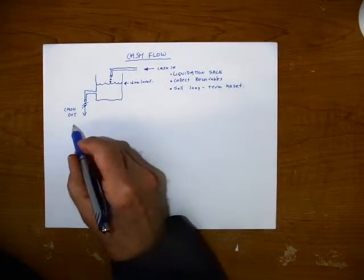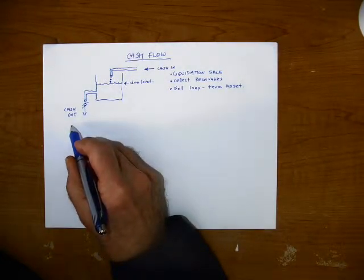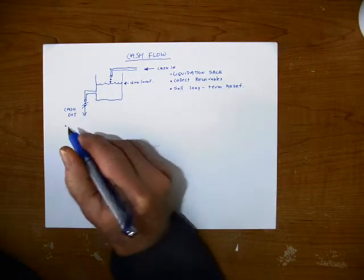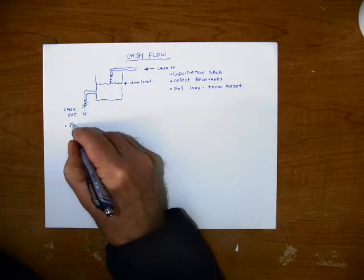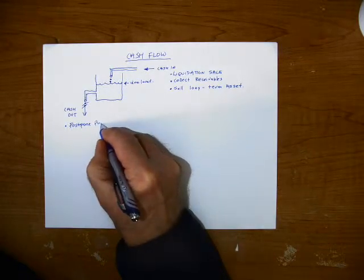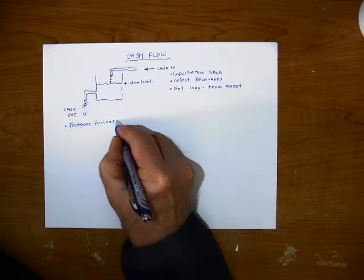Now let's take a look at cash out. What are ways that we can stop the flow of cash? Well, let's see. We could postpone purchases.